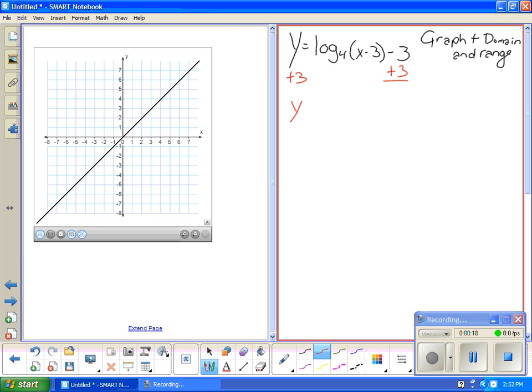So we get y plus 3 equals log base 4 of x minus 3. And then you do the log circle, take 4 to this power, and it equals what you have here. So then 4 to the y plus 3 equals x minus 3.